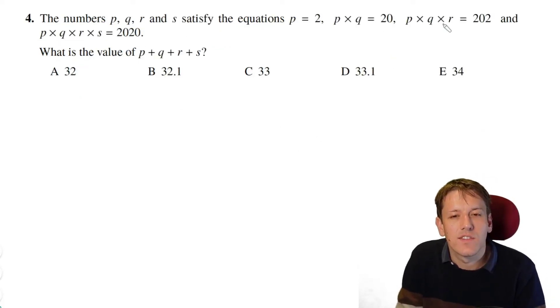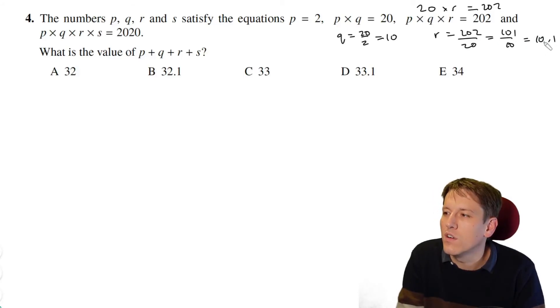For the numbers P, Q, R, and S that satisfy these relationships, we can see P is 2, and then P times Q is 20. So if P is 2, we've got 2 times Q is 20, so Q must be 20 divided by 2, which is 10. And then we've got P times Q is 20 here, so we've got 20 times R is 202. That means that R is going to be 202 divided by 20 here, which is 101 over 10, which is 10.1. And then P times Q times R is 202, so I've got 202 times S is 2020. So S is 2020 over 202, which is 10. So P plus Q plus R plus S, that must be 2 plus 10 plus 10.1 plus another 10. That's 32.1, and so the answer here is B.